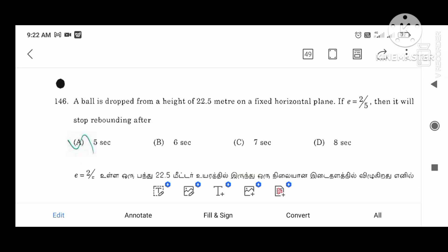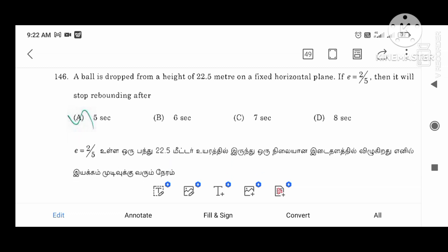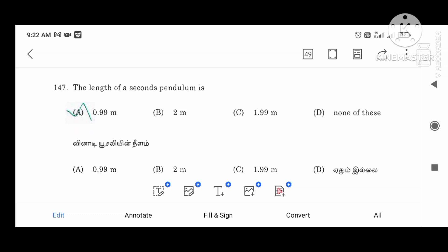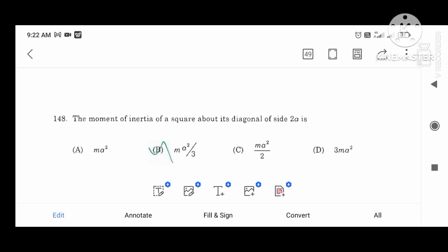Next. Ball dropped from the height. That height is horizontal plane. Rebounding after 5 seconds. The length of the pantalome is 3.99m. This is the result.